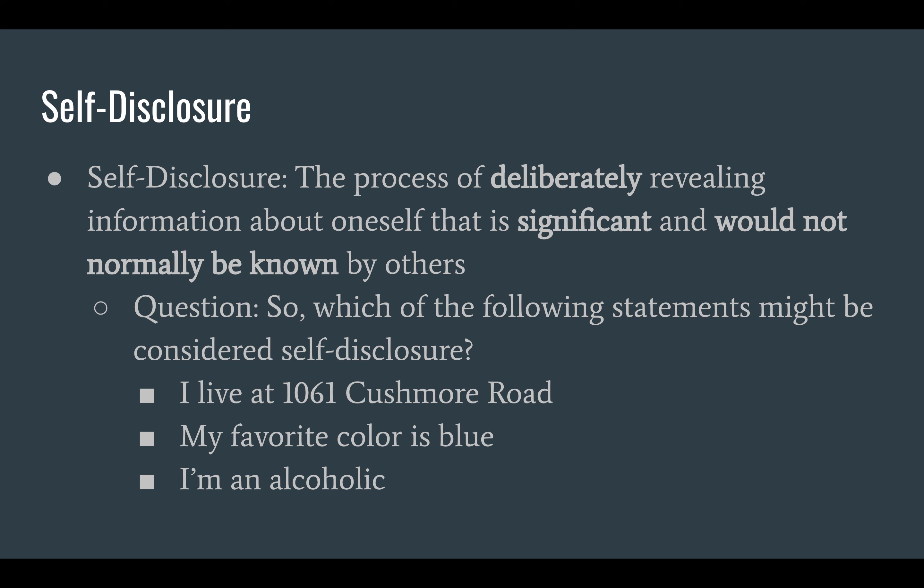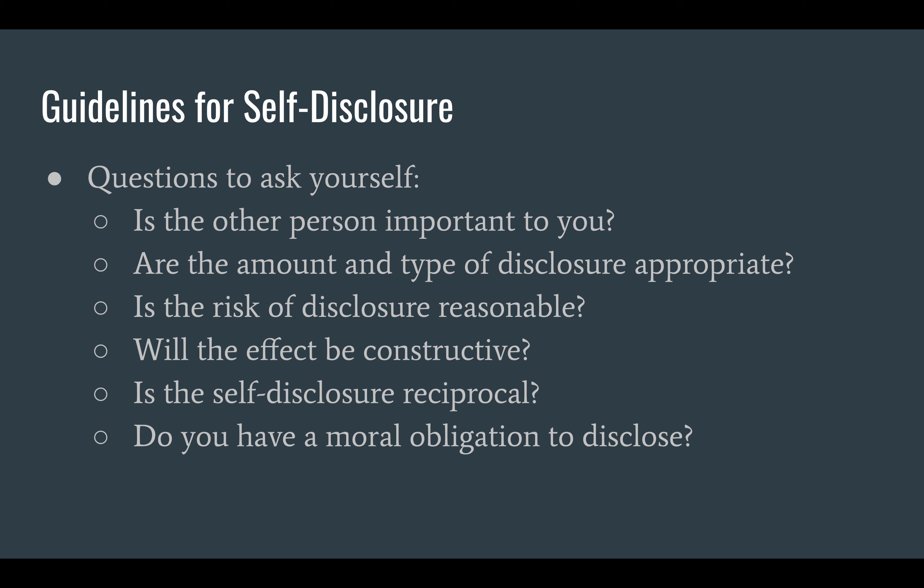We can also hurt other people with the things we say — for example, if I self-disclosed to my wife about a wild party in Las Vegas, that would probably hurt her feelings. So we need to think about these things before we perform self-disclosure. There are some guidelines, some questions to ask yourself: Is the other person important to you? Is the kind of disclosure appropriate? Are the risks reasonable? Will it have a constructive effect on your relationship? Will the other person likely respond with their own self-disclosure? Have they already self-disclosed to you? And do you have a moral obligation to make these disclosures?